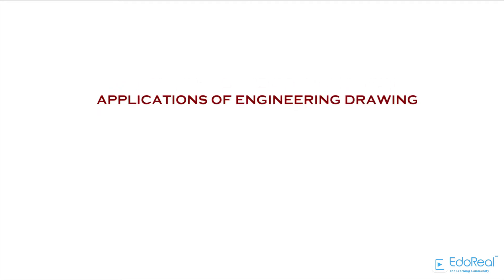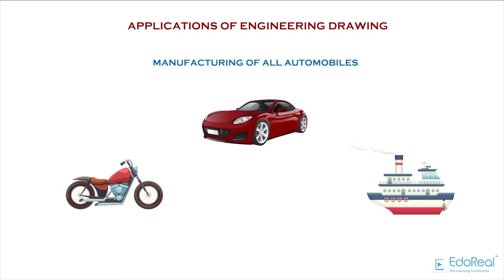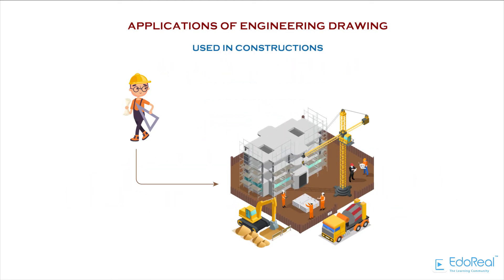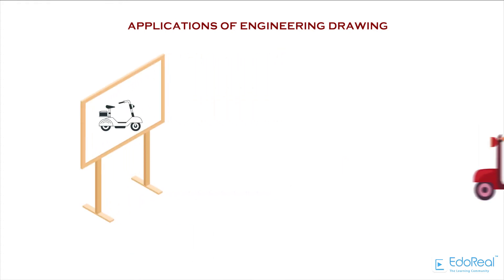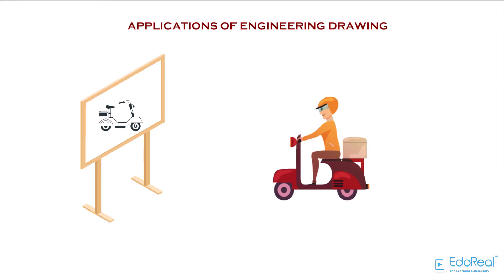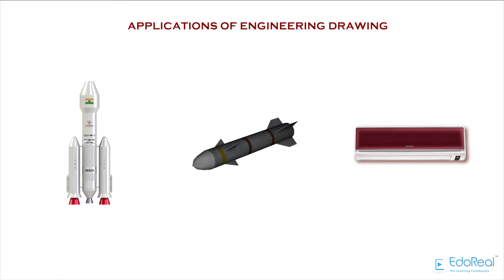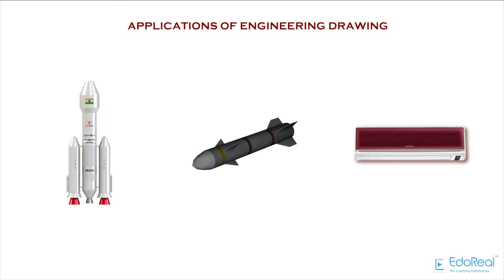Applications of Engineering Drawing. Drawing is used in manufacturing of all automobiles. Drawing is used in constructions. Drawing plays a vital role in engineering and it is essential to our daily life. For example, construction of rockets, missiles, ACs, etc. Initially, they should need drawing to come out as a final output.